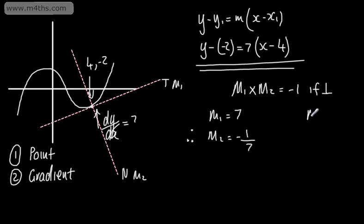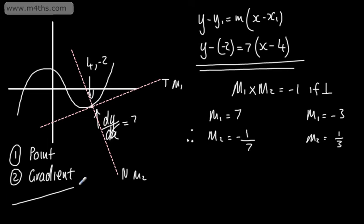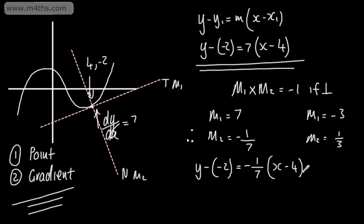So m₁ in this case I've chosen to be 7. All I do is write the negative reciprocal, therefore m₂ is going to be equal to negative 1 over 7. For example, if m₁ was equal to negative 3, we could say that m₂ was equal to positive 1 third. We simply invert the fraction and change the sign.